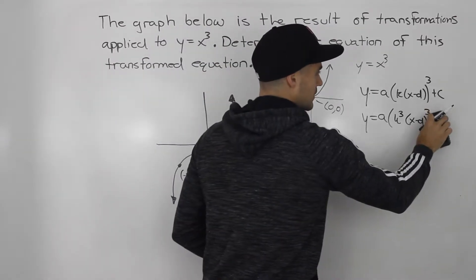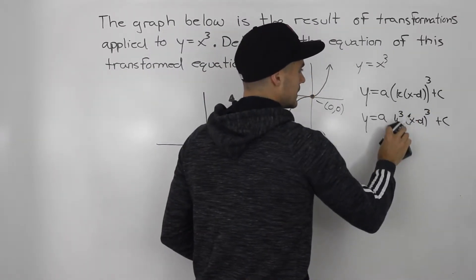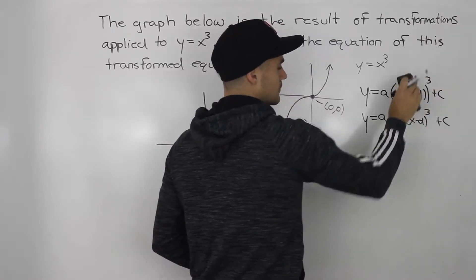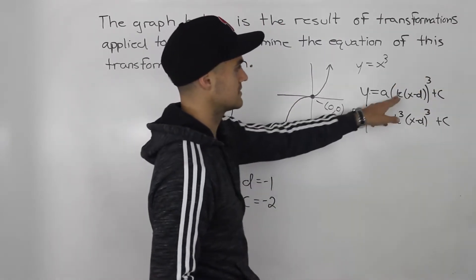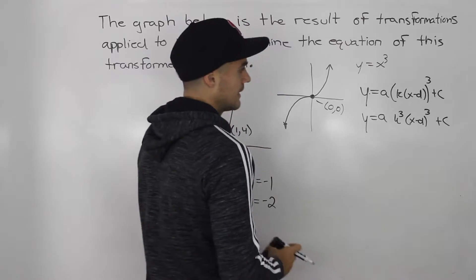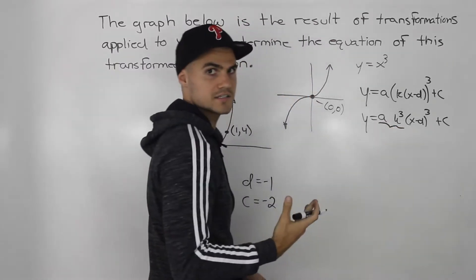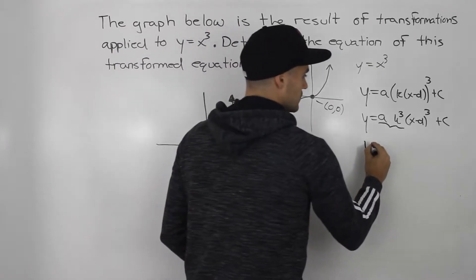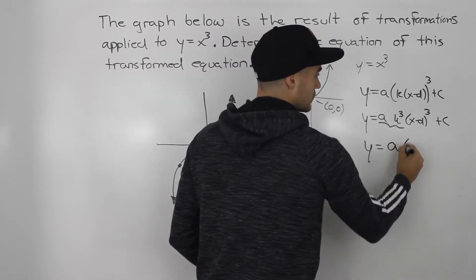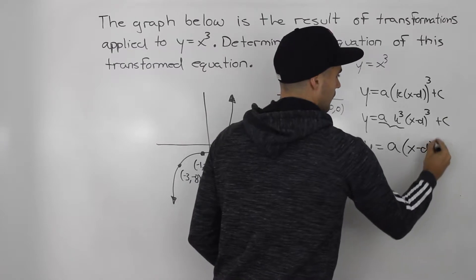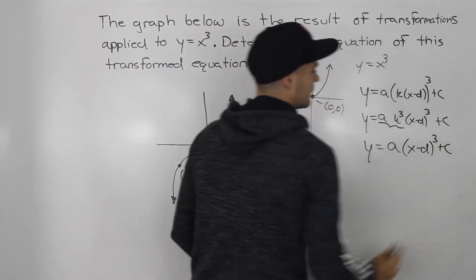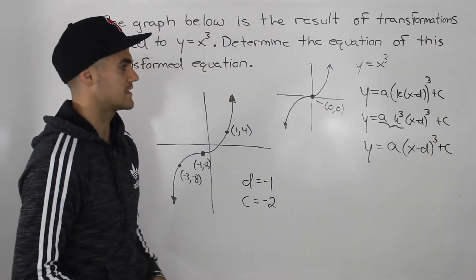So notice how you can actually get rid of these brackets now. They're not needed because we took this 3 and we distributed it inside the bracket to this term and that term. And now notice how this a times k cubed, that's like a constant on its own. So we can actually make that into an a value itself.